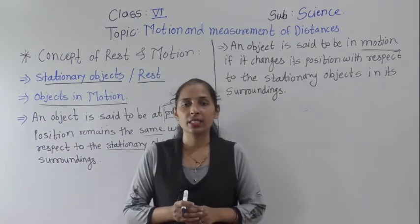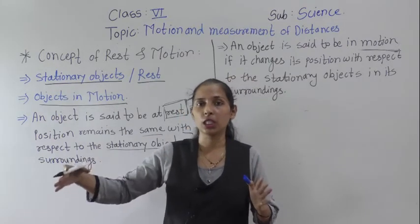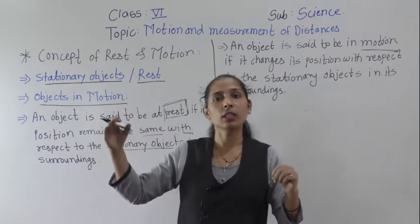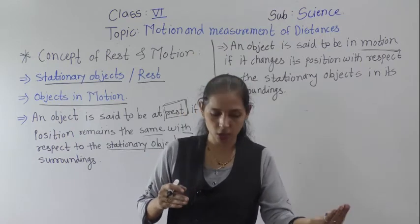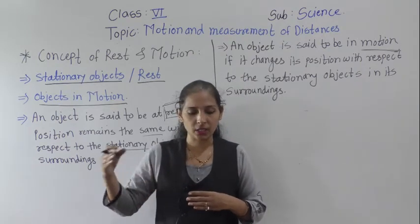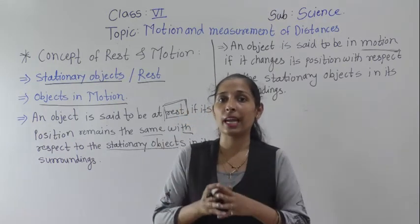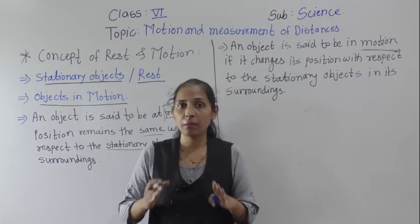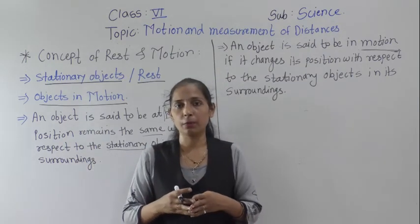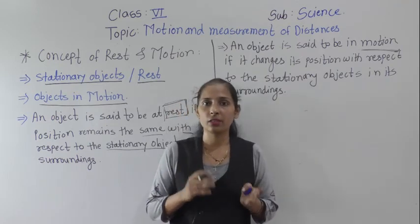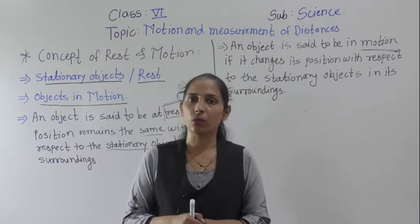This means motion and rest are relative terms. What one observer sees as motion does not mean another observer will also see it as motion — the other observer may see it as rest. An object that appears to be in motion with respect to one observer may appear to be at rest with respect to another observer. So rest and motion are both relative terms. We will stop here and meet in the next video. Thank you.